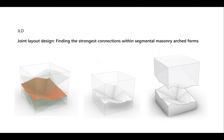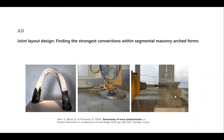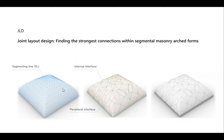I want to briefly explain the extension of my project, working on more complex geometries — what we call joint layout design. We try to find the layout of joints and interlocking shapes, which could be any arbitrary shape, by which we can find the strongest connections between two blocks and for any other assemblies. Based on new developments in digital manufacturing, this is a timely topic to work on.